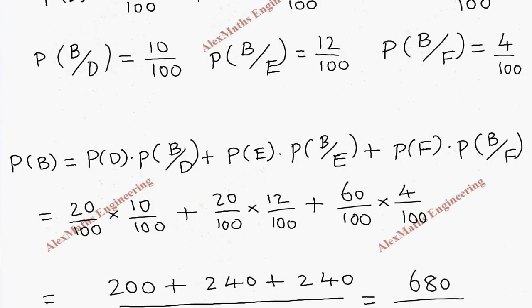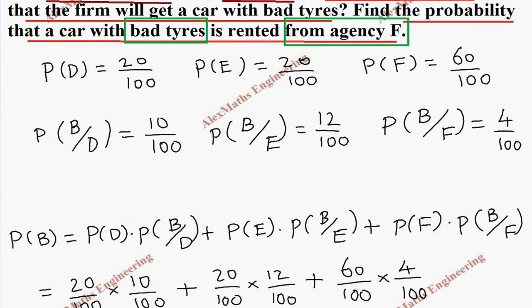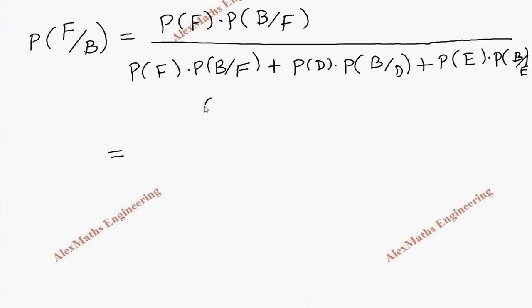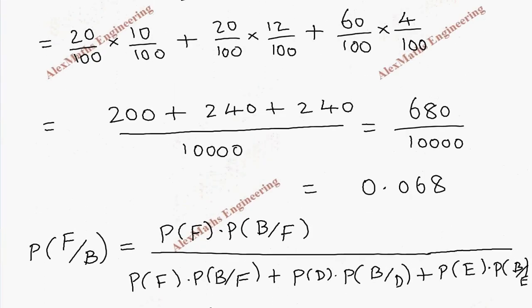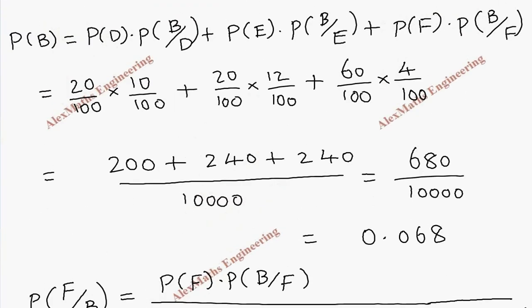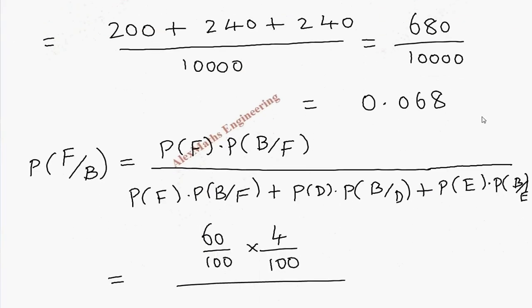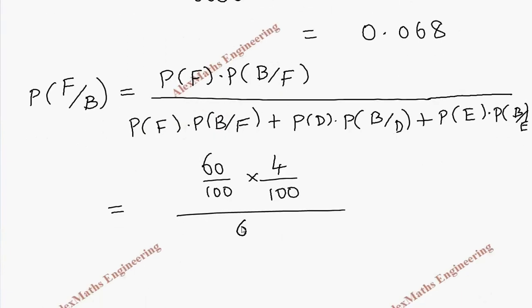Now we are going to substitute the values. For the numerator, P(F) into P(B|F) is 60 by 100 into 4 by 100. So this is 60 by 100 into 4 by 100 divided by—this entire denominator is the one which we have calculated in this term. So this entire value we have it as 680 by 10,000.